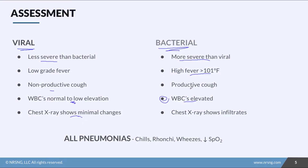With bacterial pneumonia you're going to see fever, productive cough, and elevated white blood cells. With all kinds of pneumonia, you're going to see chills, ronchi, wheezes, and decreased SpO2. You can identify the difference between viral and bacterial based on the severity of fever, WBCs, and even the chest x-ray findings.